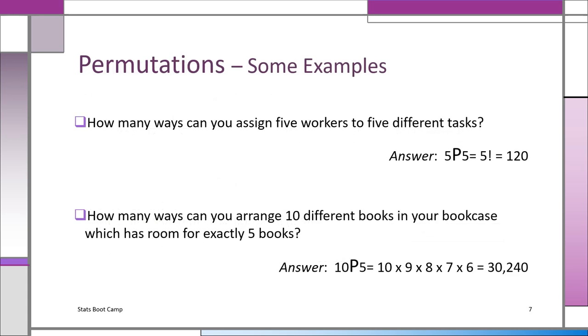Let's look at some problems. How many ways can you assign five workers to five different tasks? Well, that's 5P5, which is 5 factorial. 5 times 4 times 3 times 2 times 1, which is 120. Again, you have a factorial key, so you can just get it directly. 120.